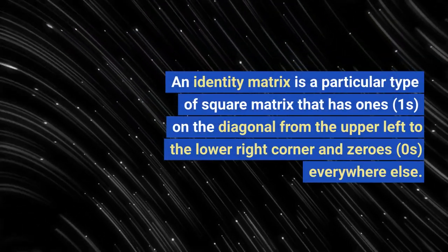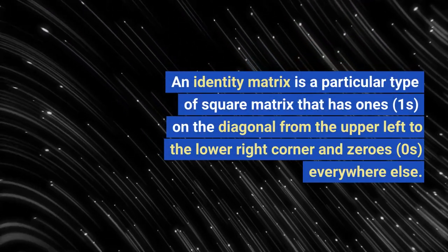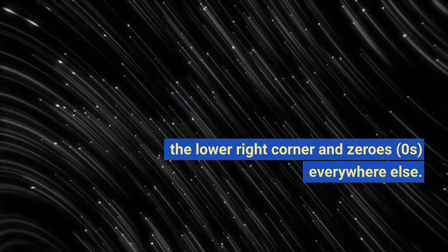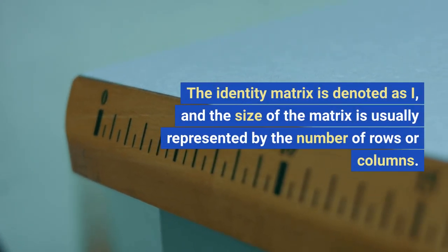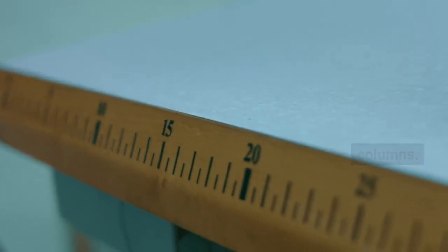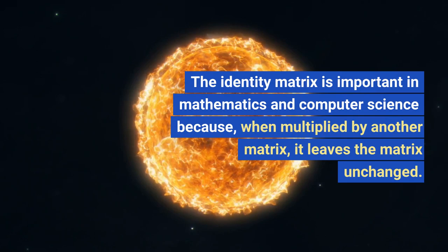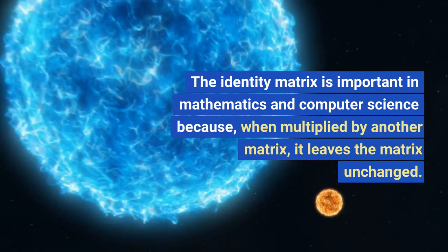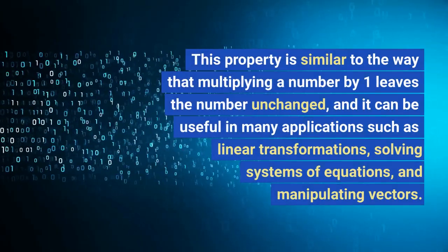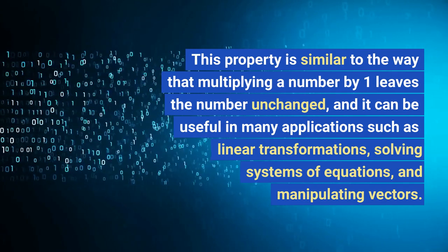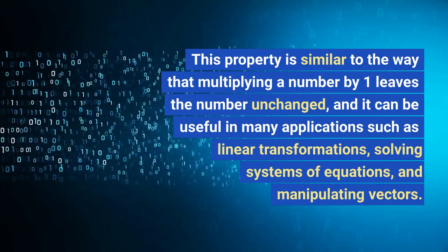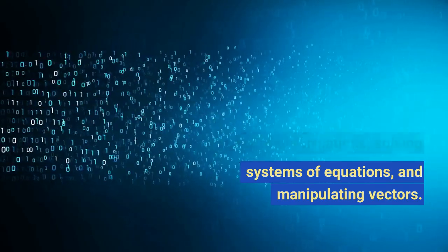An identity matrix is a particular type of square matrix that has ones on the diagonal from the upper left to the lower right corner, and zeros everywhere else. The identity matrix is denoted as I, and its size is usually represented by the number of rows or columns. It is important in mathematics and computer science because, when multiplied by another matrix, it leaves the matrix unchanged — similar to how multiplying a number by one leaves it unchanged. This property is useful in linear transformations, solving systems of equations, and manipulating vectors.